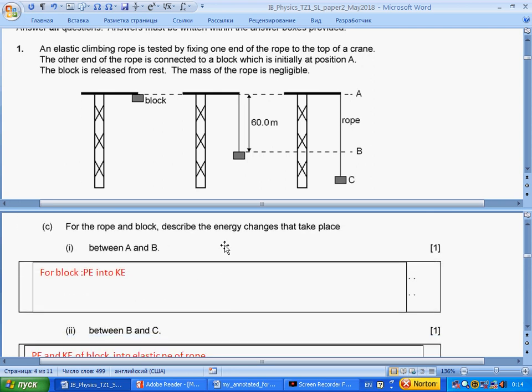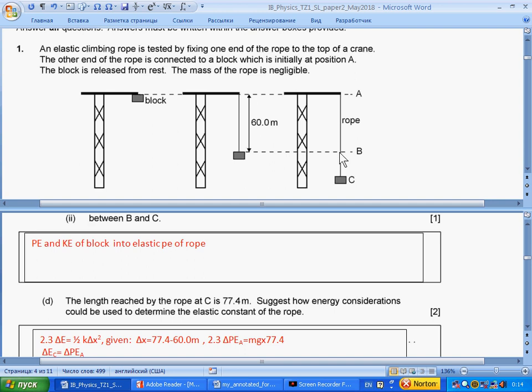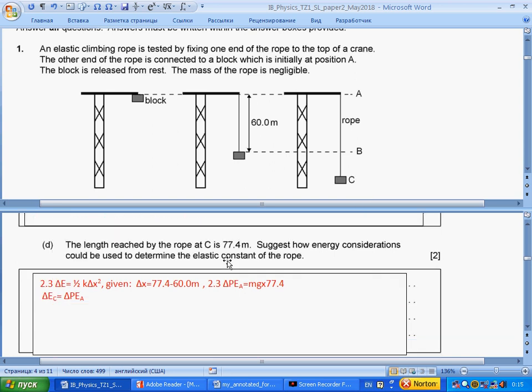For the rope and the block, describe the energy changes between A and B. Between A and B, the block falls down. So, potential energy decreases, kinetic energy increases. For the block, potential turns into kinetic. Between B and C, at B, the block has both potential and kinetic energy. At C, it has only elastic potential energy. So, potential and kinetic energy turns into elastic energy of stretched rope - elastic potential energy of stretched rope.